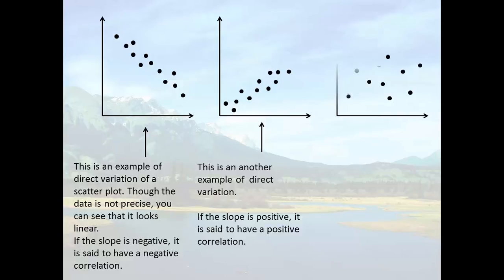This last example here, it's an example where there is really no relationship whatsoever. There are just points scattered all over the place. And when that occurs, it's referred to as having zero correlation.